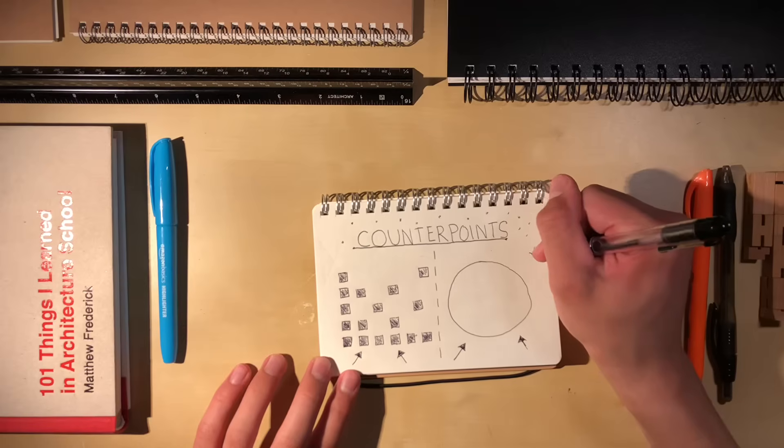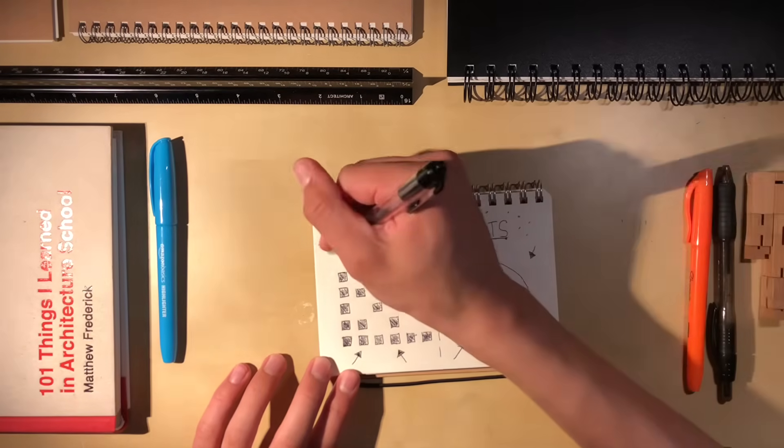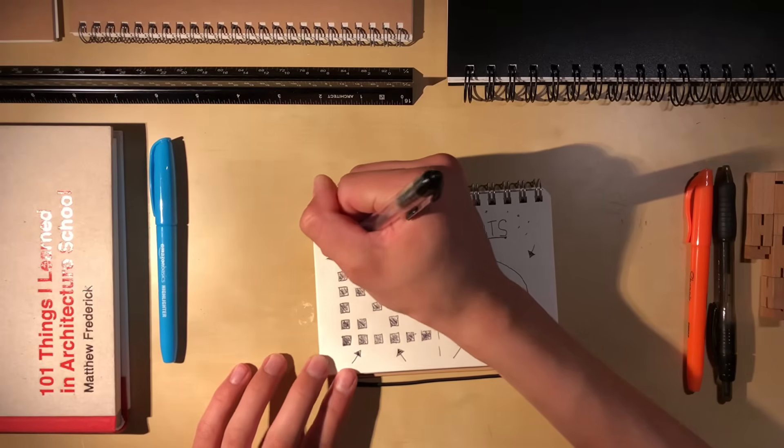As far as the size of the circle on the right, it is fairly large in comparison to its counterpoints on the left-hand side, which are fairly small boxes.